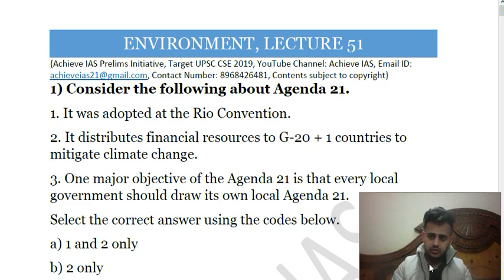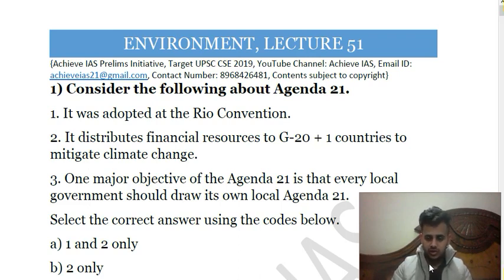We cover 10 topics in cyclic manner — two topics per day over five days — and we will continue this till 31st May. The date was chosen because UPSC CSE 2019 prelims is on 2nd June, so we end the series one day before your exam. Today's lecture covers Environment and it is lecture number 52.